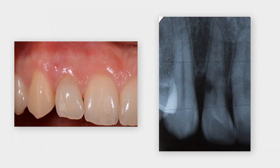The periapical radiograph demonstrates a radiolucent area inside the root. The bone crest level on the mesial side is excellent, whereas the distal crest level is slightly reduced due to a local inflammatory process in the area of the root resorption.